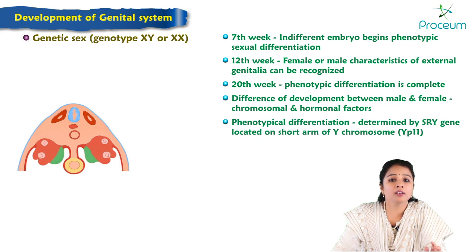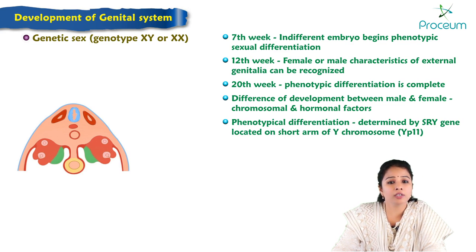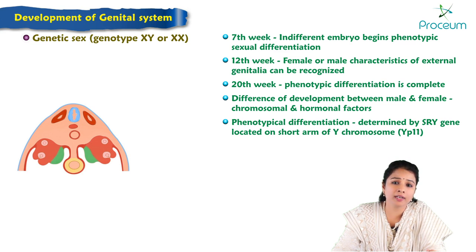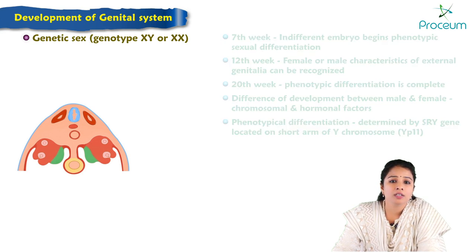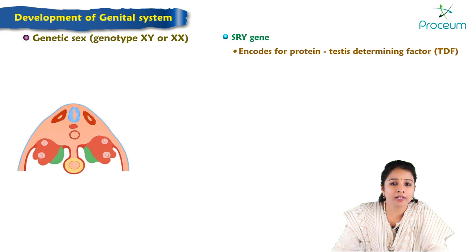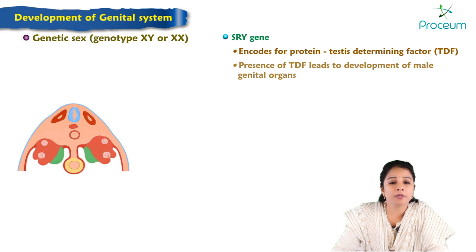Phenotypical differentiation is determined by the SRY gene, which is located on the short arm of the Y chromosome — specifically at Yp11. The SRY gene encodes for a protein called testis-determining factor, TDF. The presence of TDF leads to the development of male genital organs.